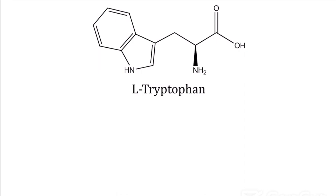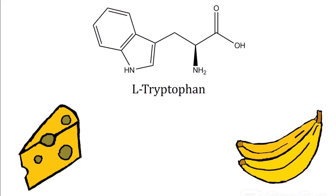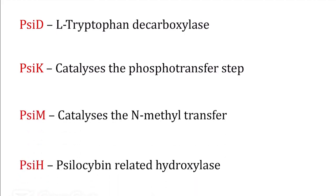secondary metabolite is L-tryptophan, an alpha amino acid found in many places such as cheese, bananas, and even you and I. However, in hallucinogenic mushrooms, it undertakes a special pathway where four enzymes—psi-D, psi-K, psi-M, and psi-H—create a combined reaction to synthesize psilocybin.